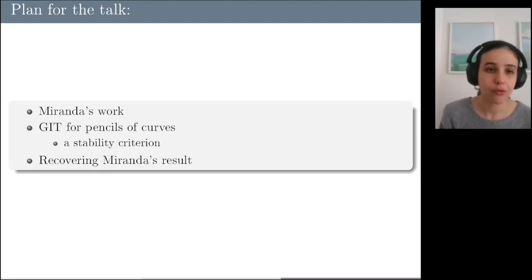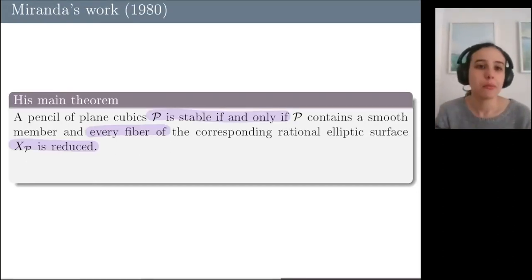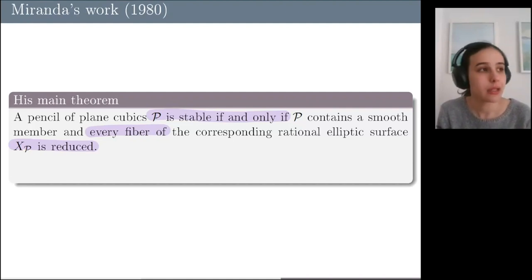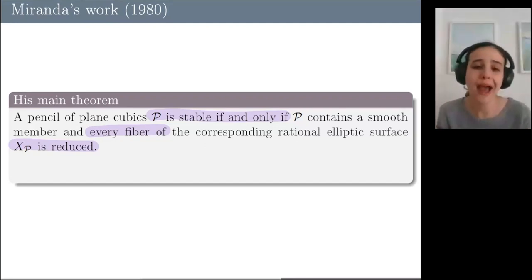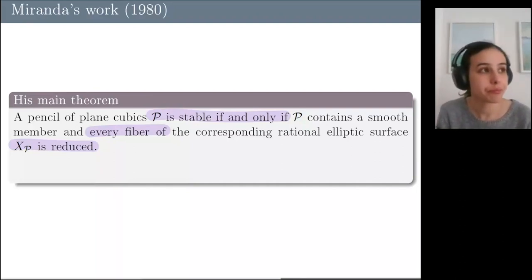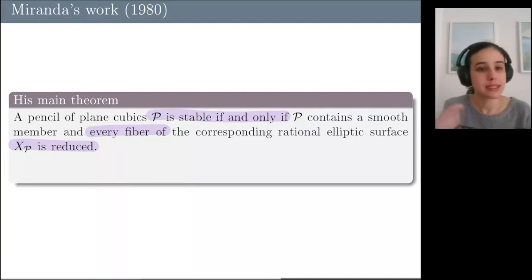Let me describe what Miranda did in his very first paper in 1980. He was looking at GIT stability for pencils of plane cubics, and the main idea he explored is the correspondence between pencils of plane cubics that have a smooth member on one hand, and on the other hand the so-called rational elliptic surfaces with section. In his paper, he proved a criterion relating the GIT stability of a pencil of cubics with the types of singular fibers that appear on the corresponding rational elliptic surface.